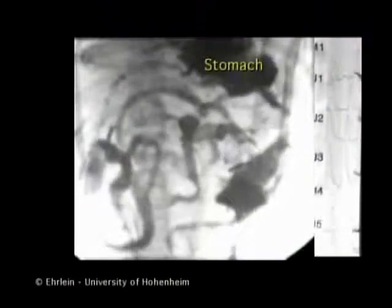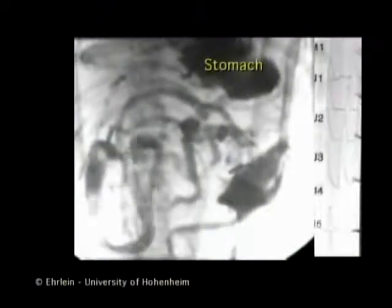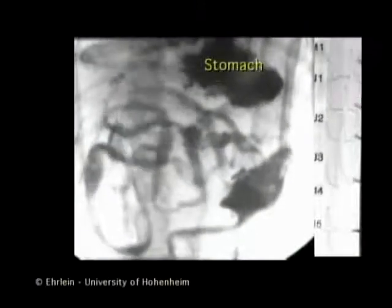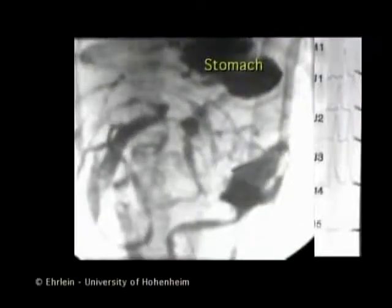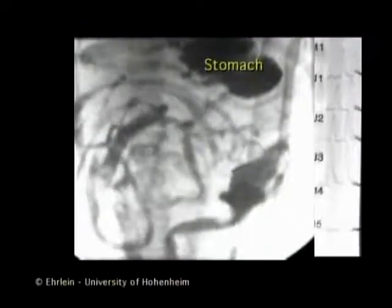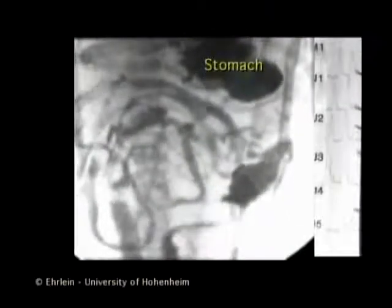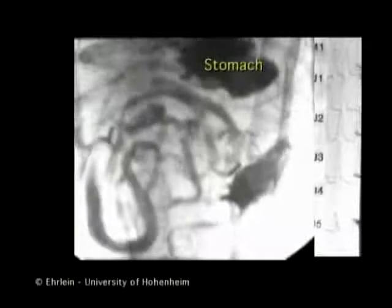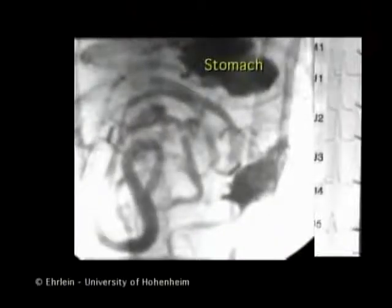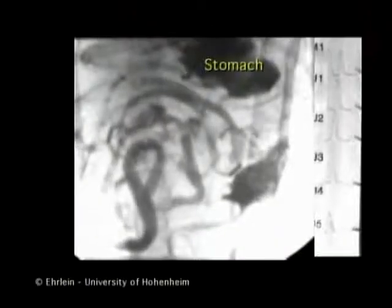The motility tracings of the afferent and efferent jejunal loops also show the rapid waves. This abnormal motor pattern often occurs in the fasted state and lasts for several hours.